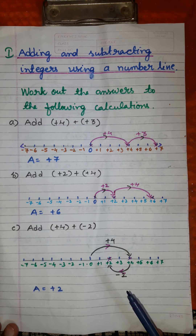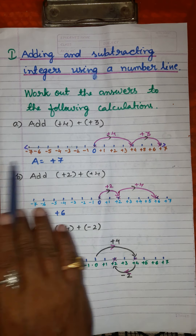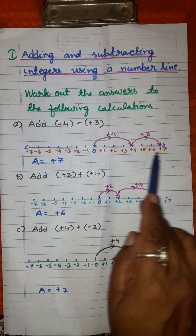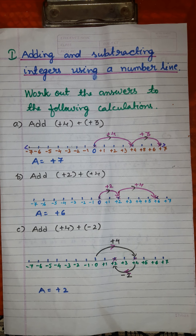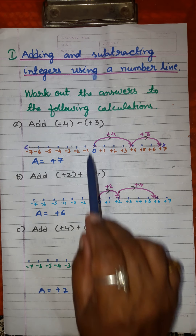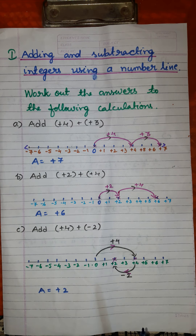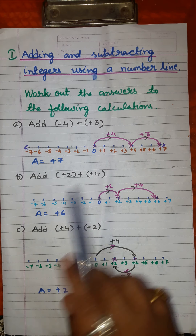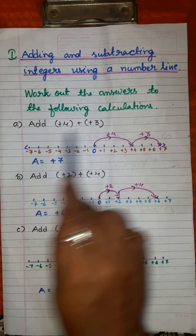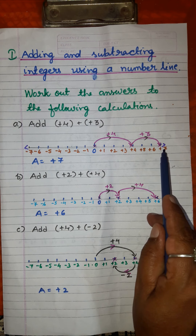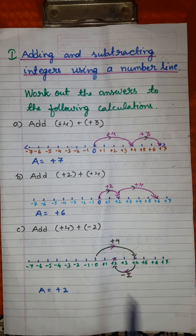It may be difficult to mark more numbers if you keep the sheet vertically, but when you keep the sheet horizontally you can draw more integers to the right and left of 0. By keeping the paper horizontally you can manage bigger numbers. If the numbers have a lesser value, it is easy to manage by mentioning the positive and negative integers.